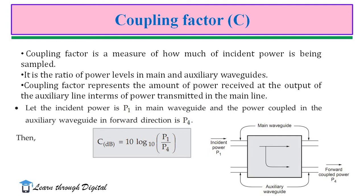The first parameter is the coupling factor, represented as C, measured in decibels. The coupling factor is a measure of how much of the incident power is being sampled. It is the ratio of power levels in the main and auxiliary waveguides, representing the amount of power received at the output of the auxiliary line in terms of power transmitted in the main line. Considering incident power P1 in the main guide and coupled power P4 in the auxiliary waveguide: C (dB) = 10 log₁₀(P1/P4).